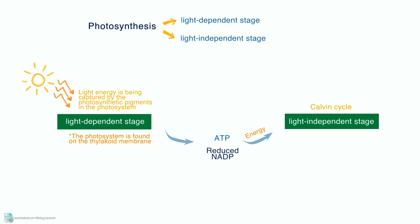while reduced NADP supplies the reducing power. Photosynthetic products such as glucose, amino acids, or lipids will be produced. ADP and NADP will return to the light-dependent stage to form ATP and reduce NADP again. This cycle goes on and on.